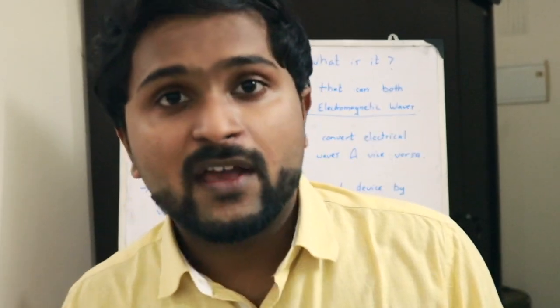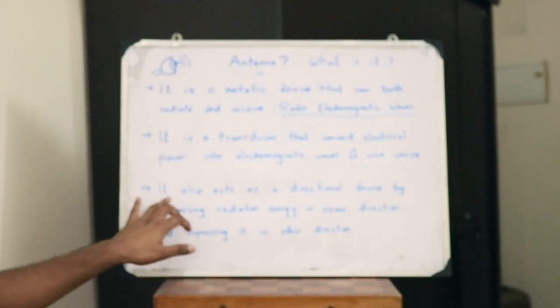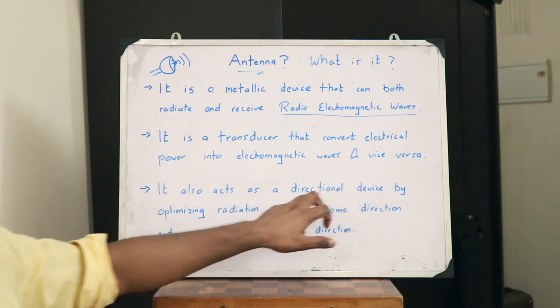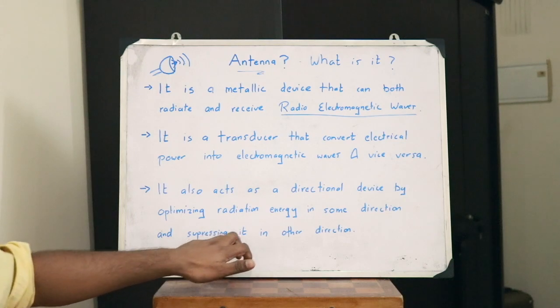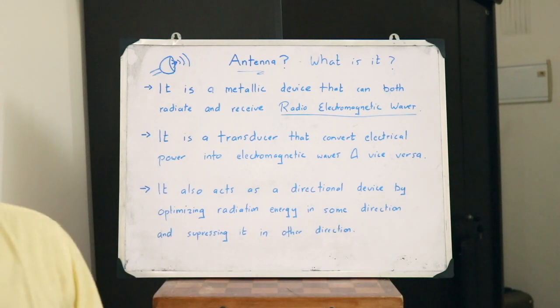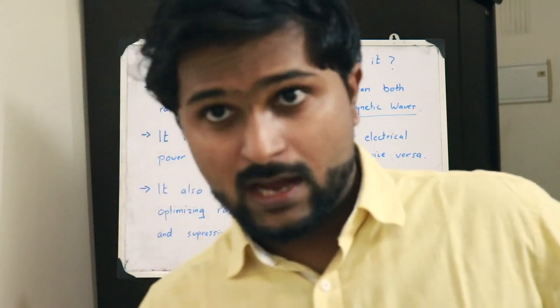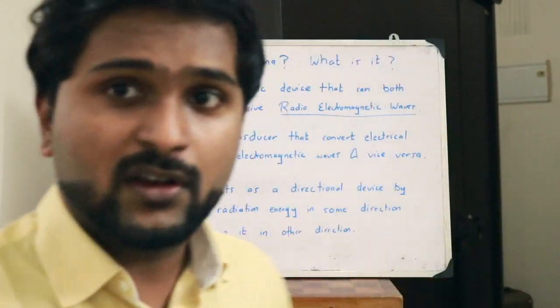An antenna serves the purpose of converting electrical power into electromagnetic waves. This electromagnetic wave moves in a particular direction, and therefore a particular antenna optimizes the direction through which electromagnetic waves are transmitted. Hence, it also acts as a directional device by optimizing radiation energy in some direction and suppressing it in other directions.